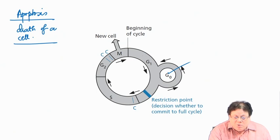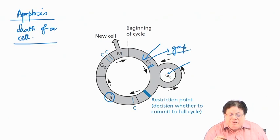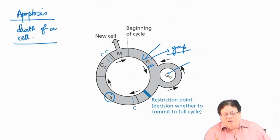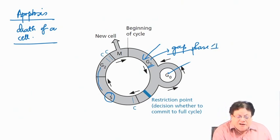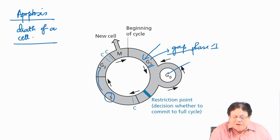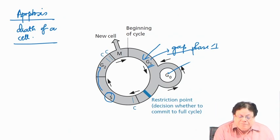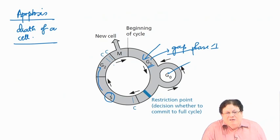If no growth is needed, cells enter the G0 resting phase. Before mitosis (cell division), all important molecules like DNA must be replicated and proteins expressed. The cell cycle starts with the G1 phase — Gap 1, which prepares the cell for DNA synthesis — then moves to the S phase for synthesis. After synthesis, Gap 2 (G2) prepares the cell for mitosis (M phase). After mitosis, one copy remains in the parent cell and one goes to the daughter cell.